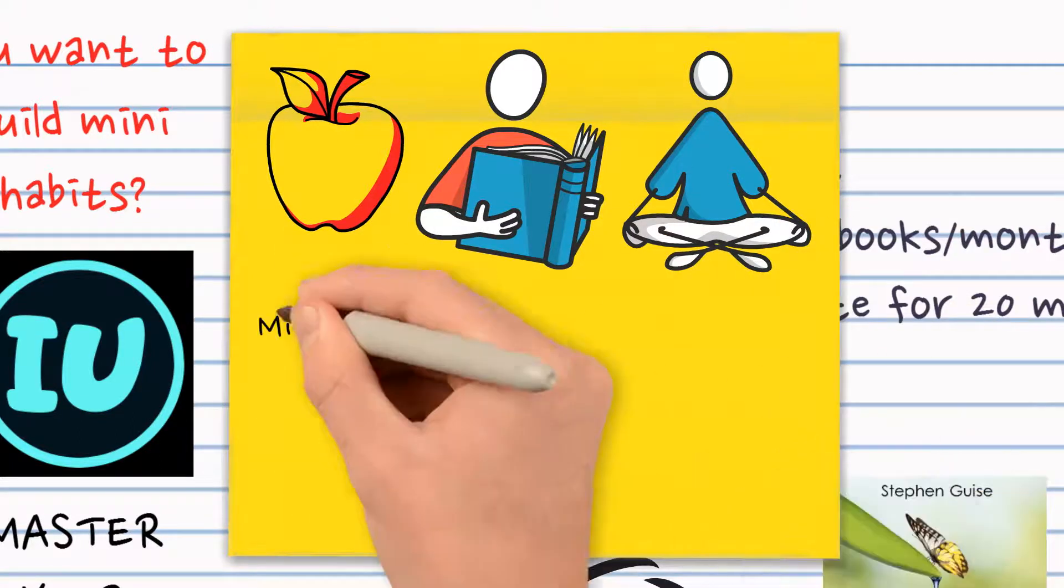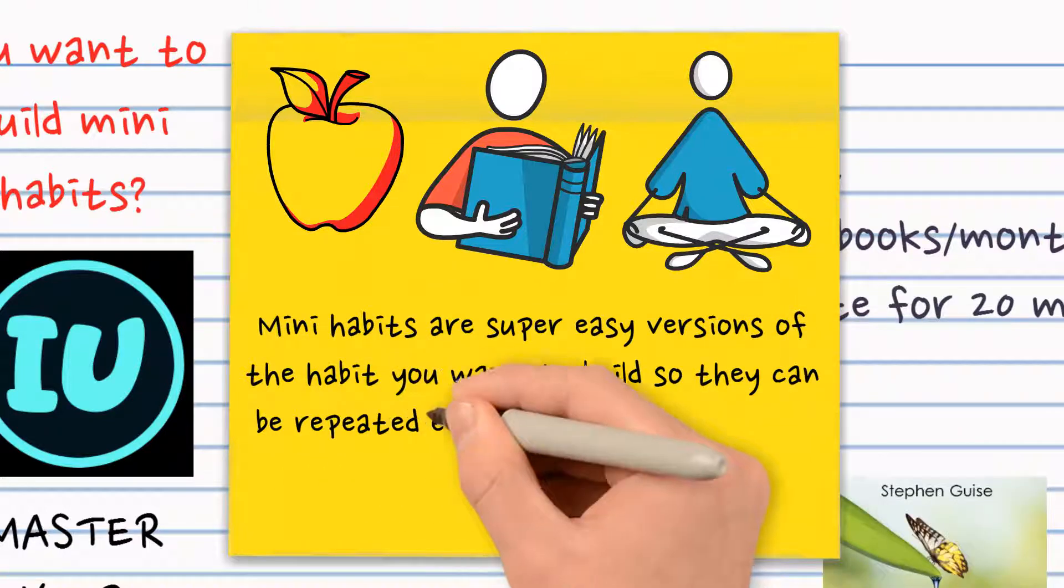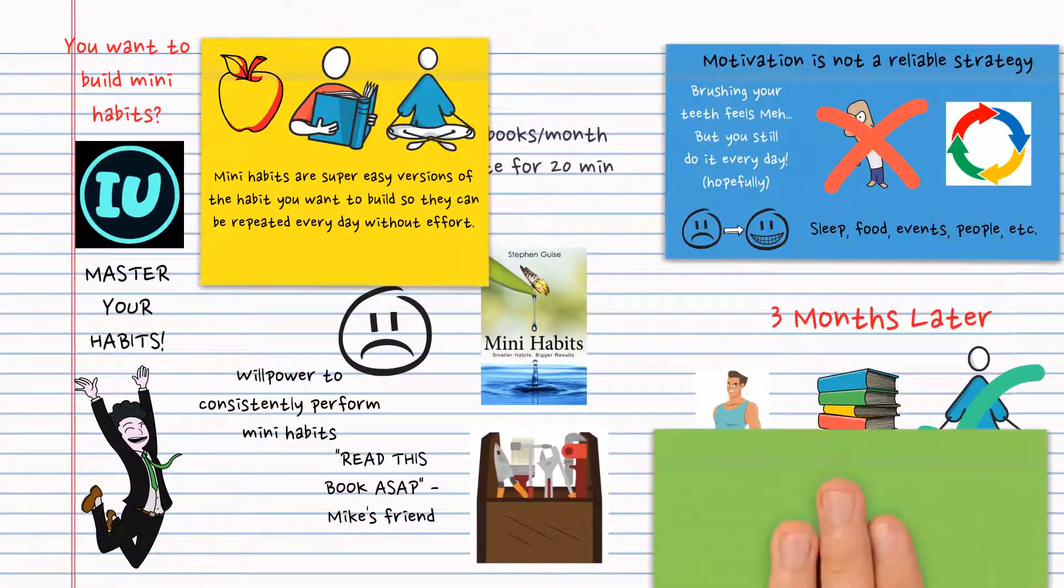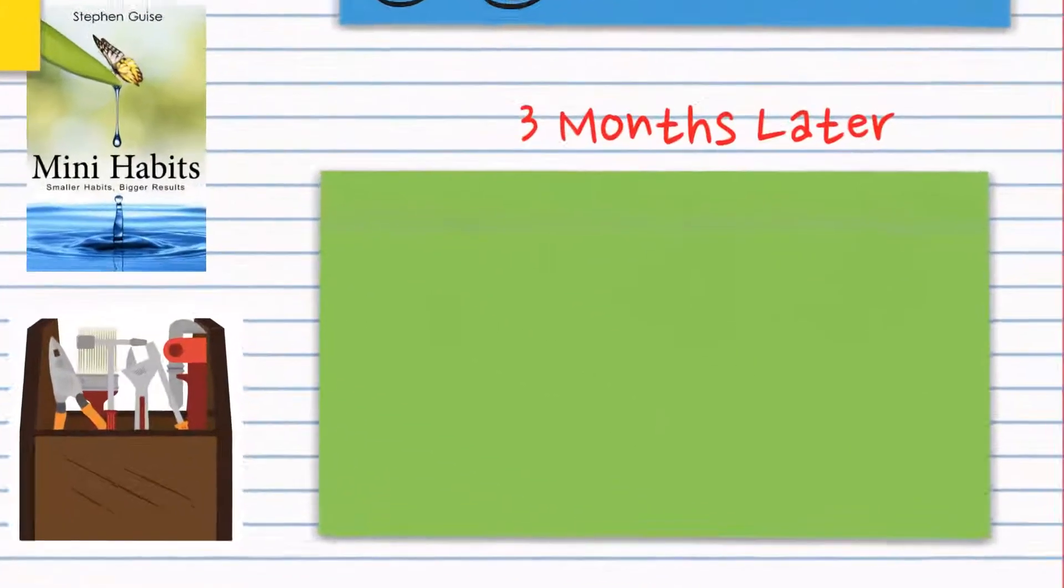Mini habits are super easy versions of the habit you want to build, so they can be repeated every day without effort. If you want to build the habit of journaling, you can start by writing one sentence every day.